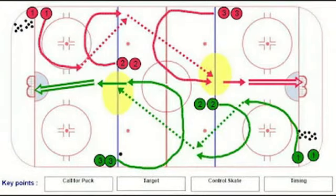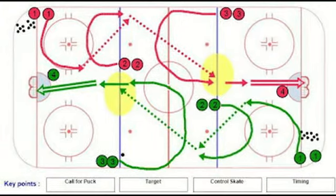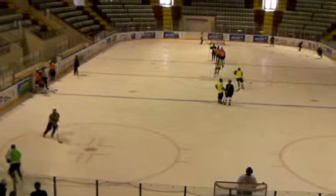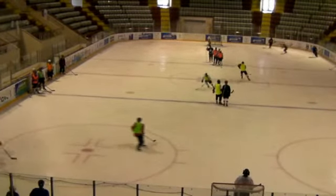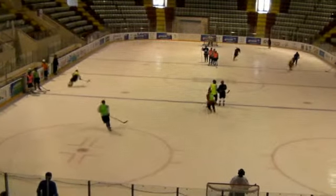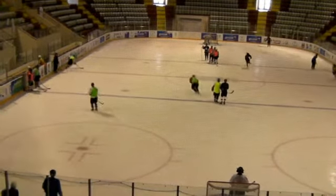Line one goes to line two, line two goes to line three, and line four can be a rebounder. Let's go to the drill live now. You'll see the players exchange lanes, create a good passing angle, and have their stick on the ice.